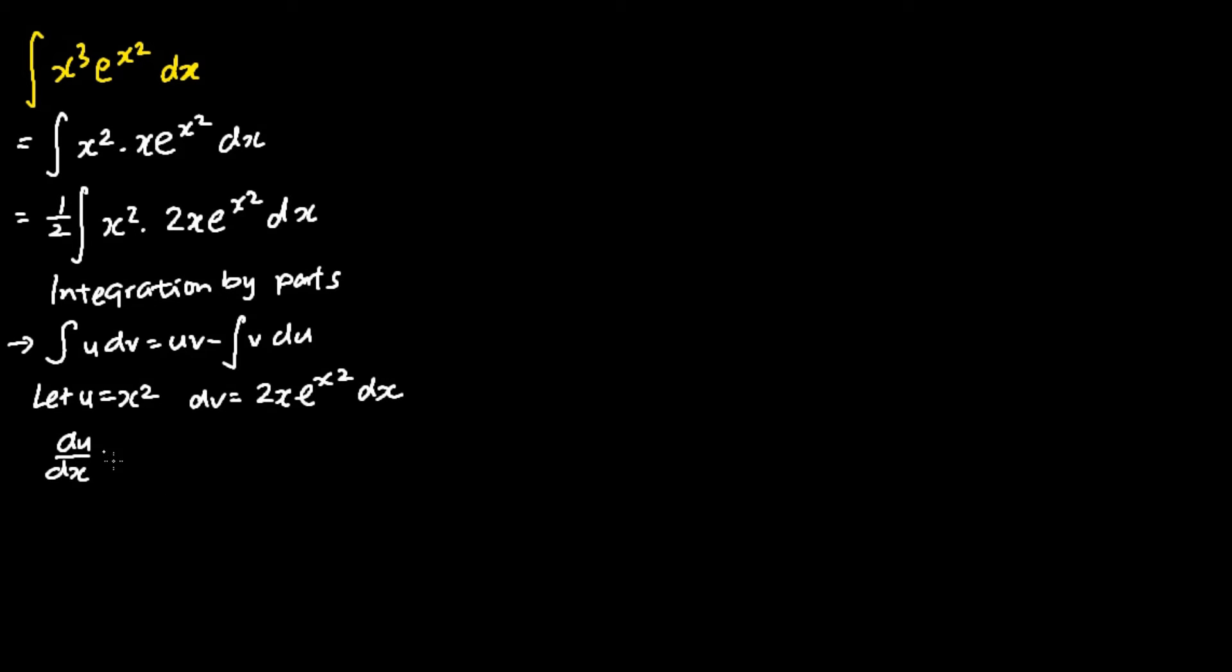To find my du, I differentiate u with respect to x. This gives me 2x, in which multiplying both sides by dx, I get du is equal to 2x dx.